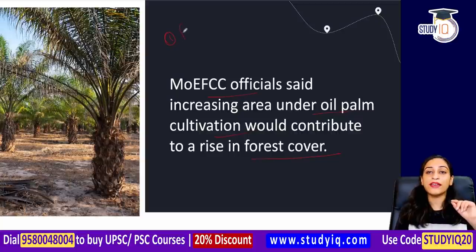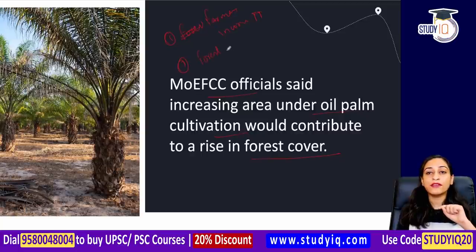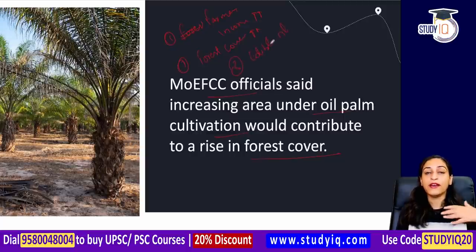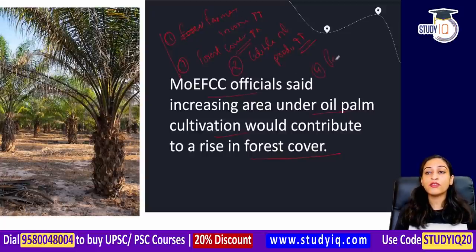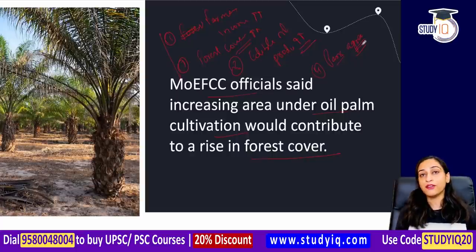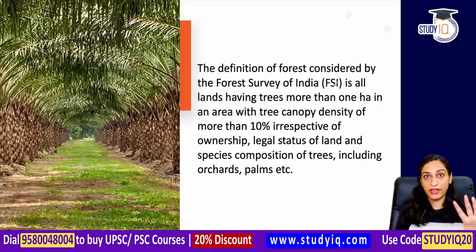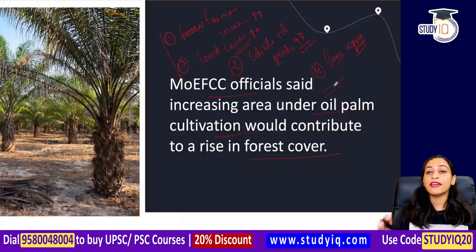So the government sees many benefits: Number one — we will increase farmers' income. Number two — forest cover will increase. Number three — we will increase our market, increase local grain and provide to our local population, and our edible oil production will increase. Number four — after forest cover increases, the Paris Agreement agenda will move towards our target. Keep these four things in mind as we discuss concerns about these four benefits and where the concerns of environmentalists lie.